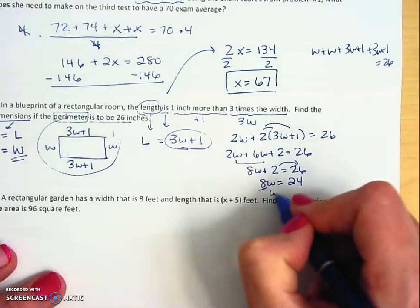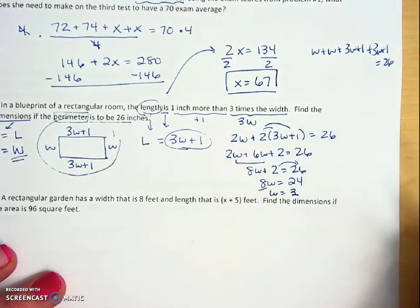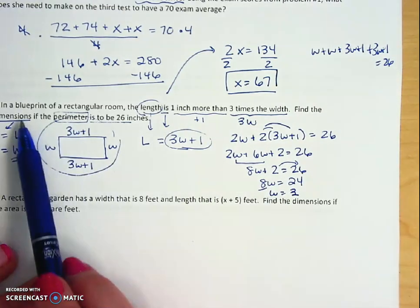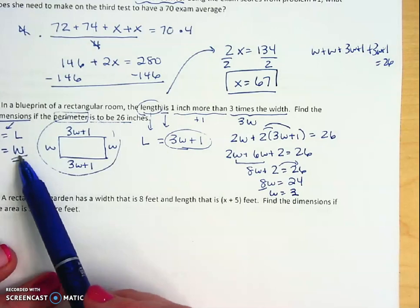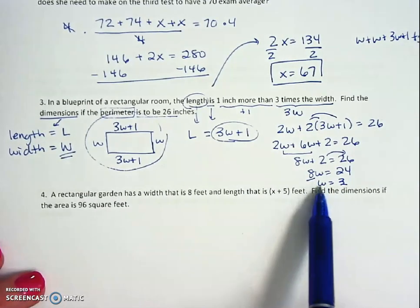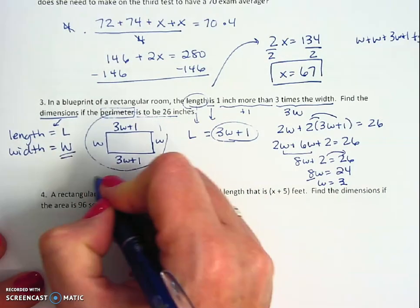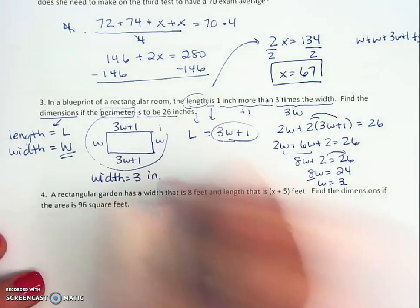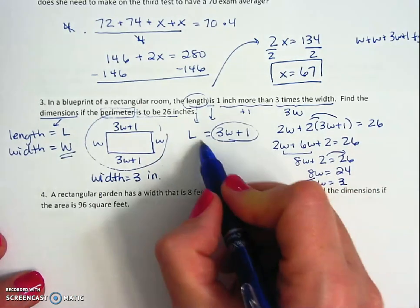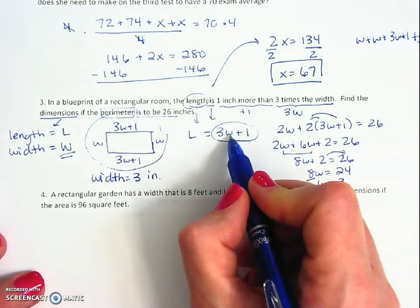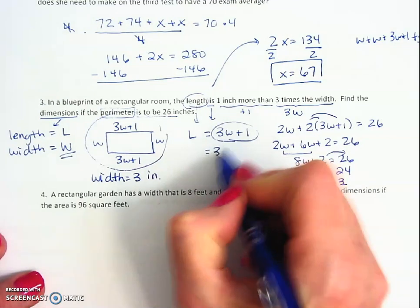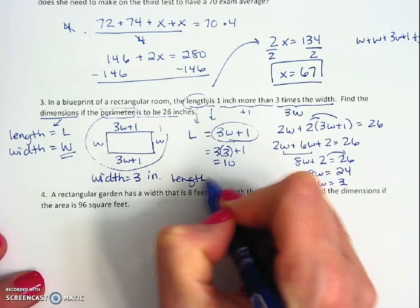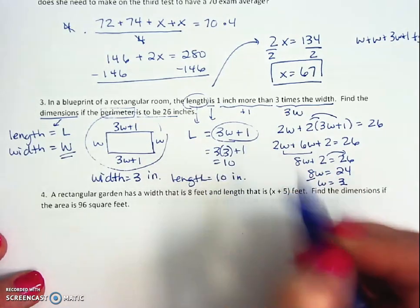And then dividing by 8 gives me w equals 3. Now that's not the full answer because it asked me for the dimensions, which is length and width. So I found the w, which is width, so width is 3 inches. But remember we said the length equals three times the w plus one, so length is three times three plus one, which is 10, so the length is 10 inches.